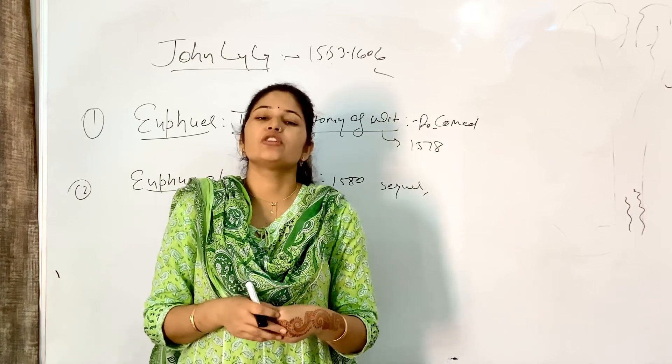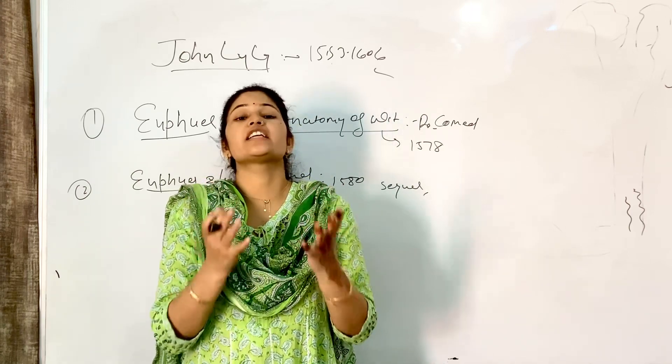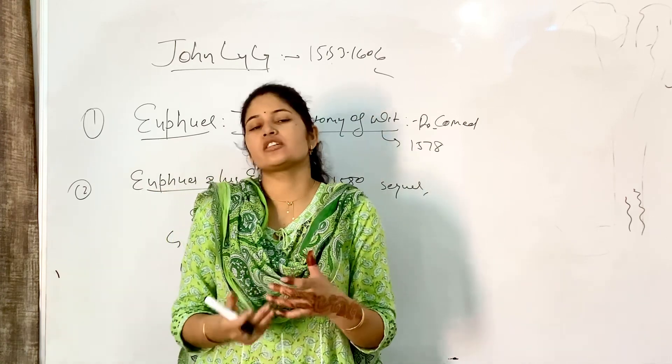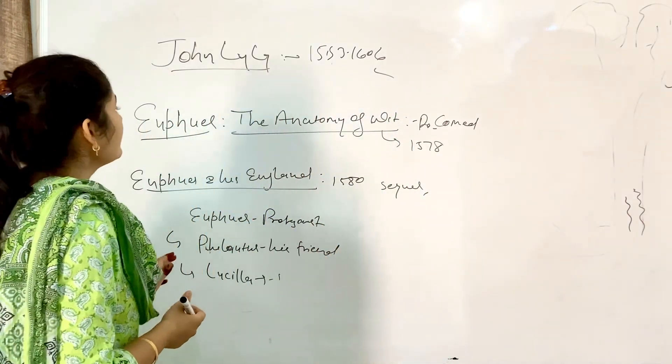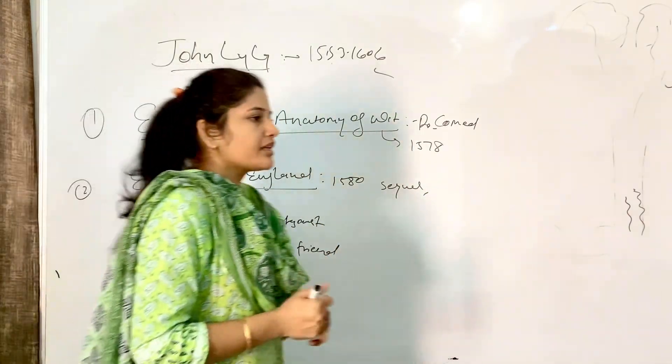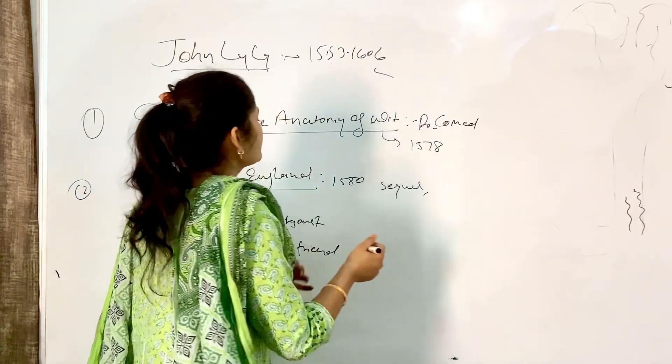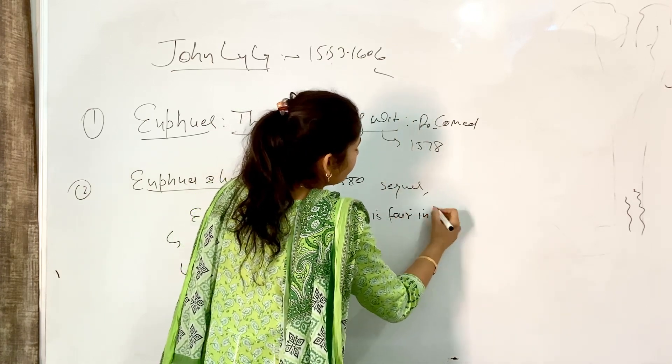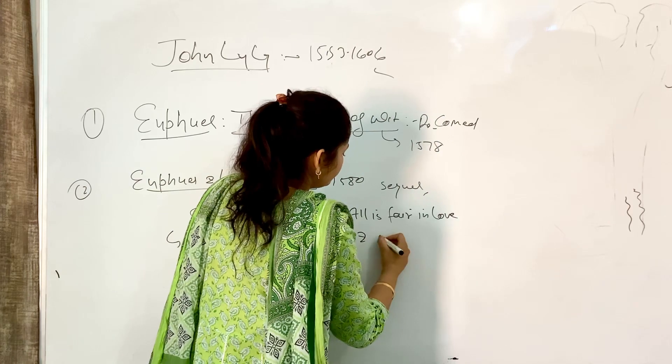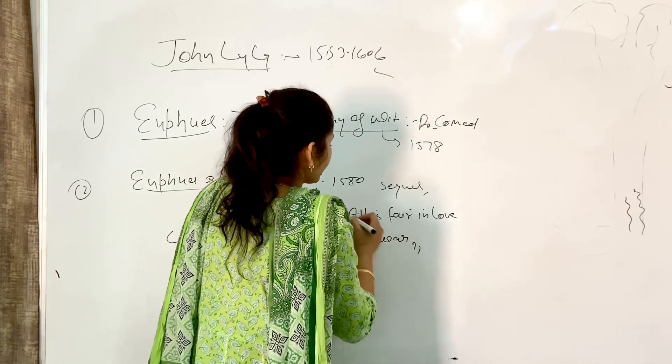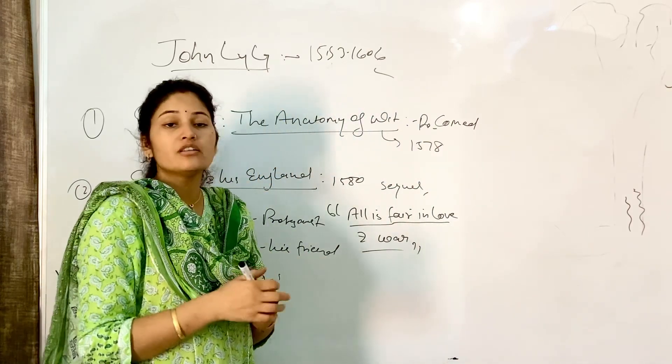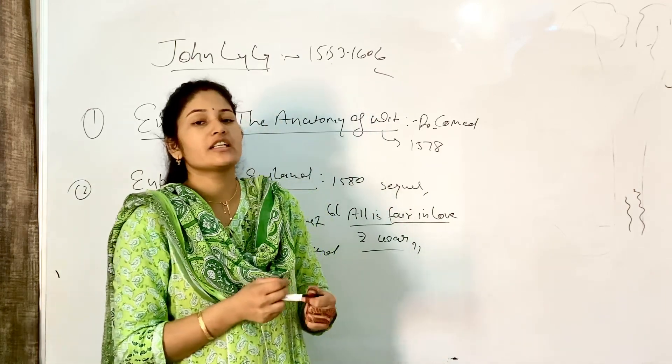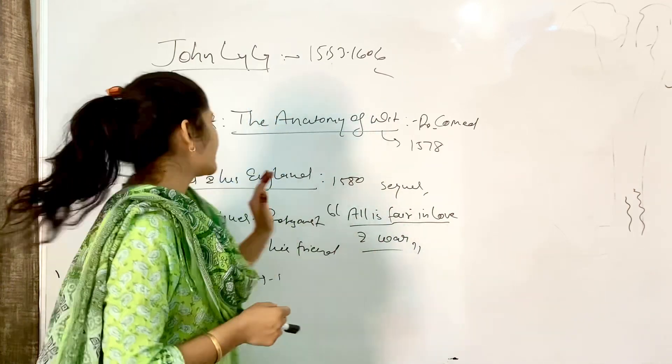Euphues becomes a mature person, gains knowledge and experience, and advises Philotus, guiding him. There is a famous statement in this story: All is fair in love and war. This is a romantic comedy.